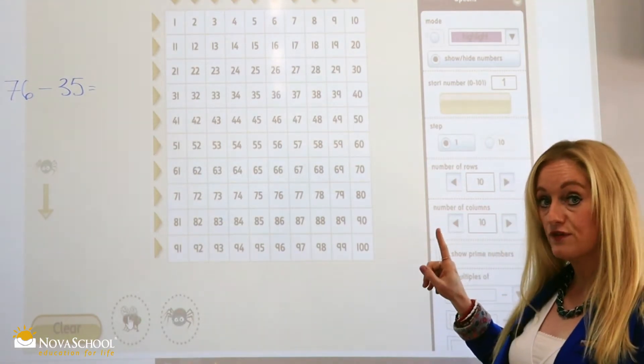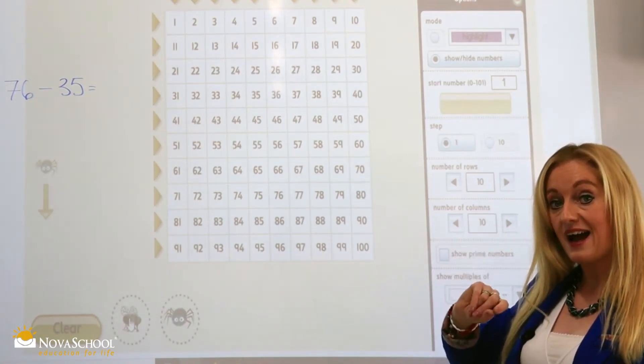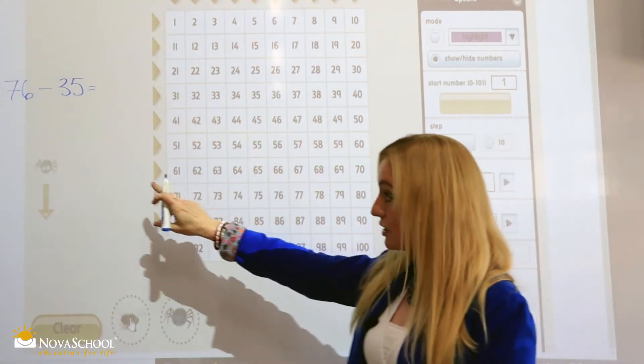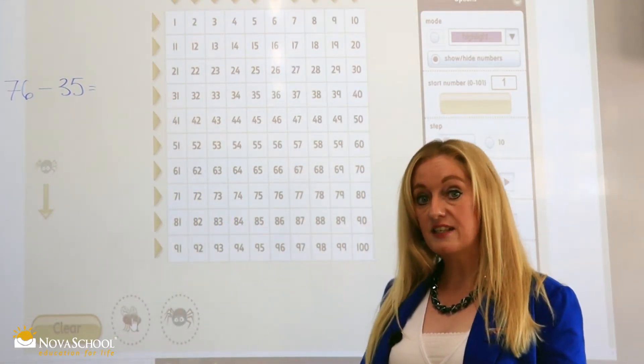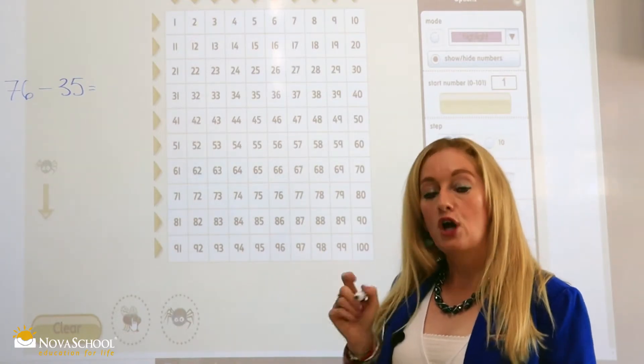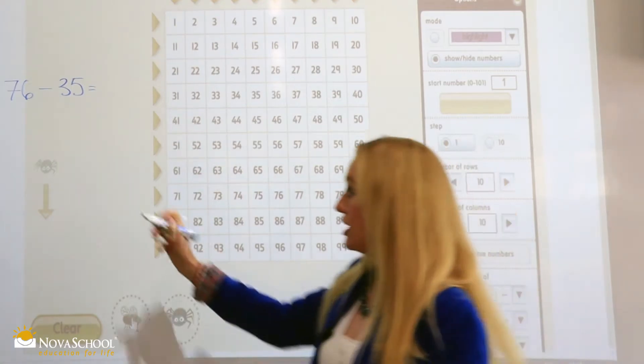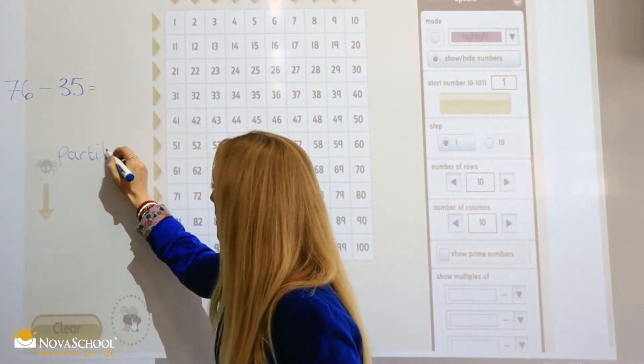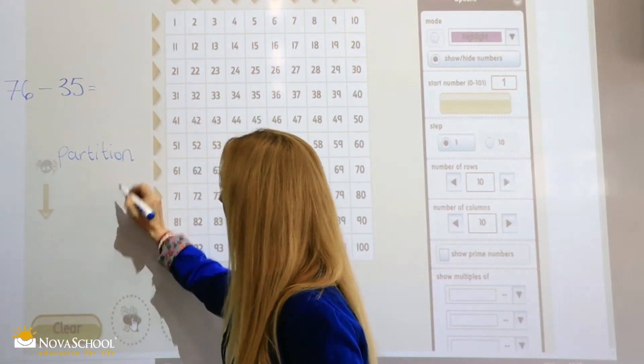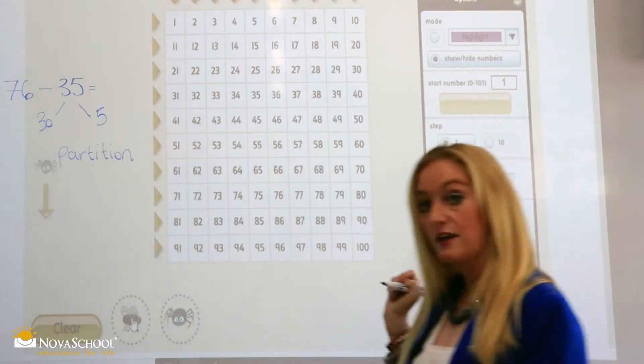Now let's have a look at our question for today. 76 subtract 35. Now look, I'm going to look at this number 35. We're going to subtract 35. So for our students to understand what to do first, we partition. Now partition the number, okay? So here we have 30 and here we have 5.